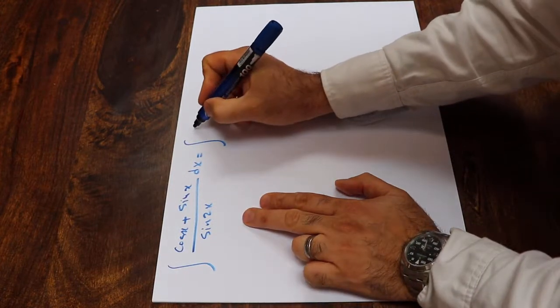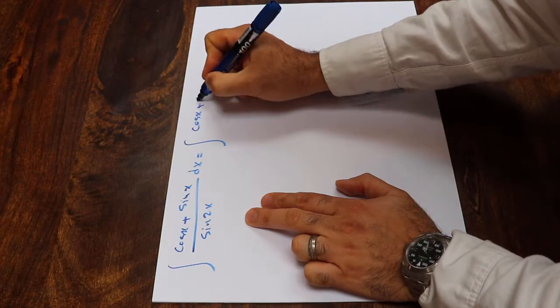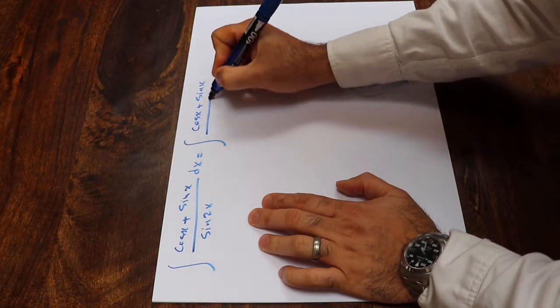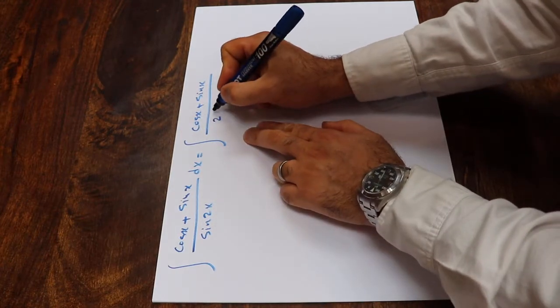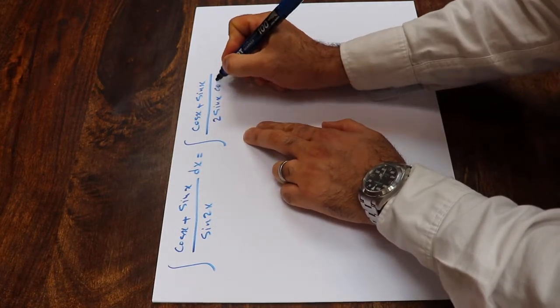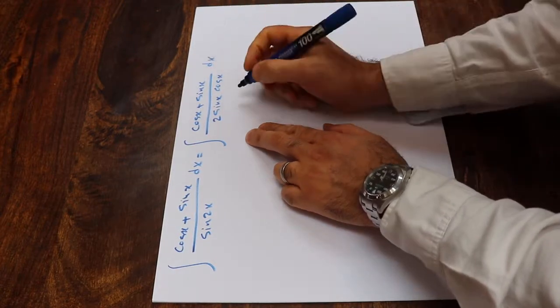You can rewrite this integral as integral of cosine x plus sine x divided by, instead of sine 2x, I write 2 sine x cosine x dx.